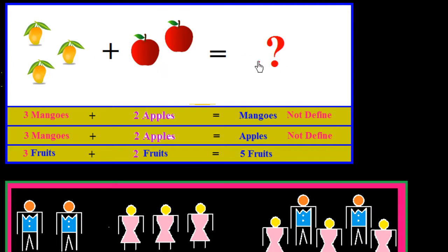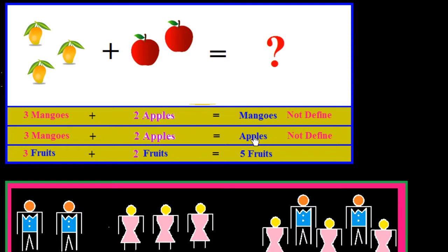Because the units differ — here we have three mangoes, and here we have two apples — we cannot say that three mangoes plus two apples equals five mangoes. We cannot say this. It cannot be defined that way. We also cannot say it equals five apples — that cannot be defined either.